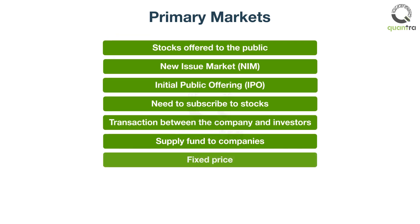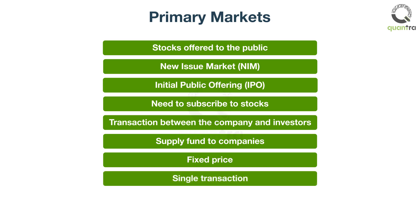The stock price would be fixed by the issuing company in the primary market. Investors can buy stocks at the specified price only. By nature, the company can issue its stock only once, and hence, the transaction in the primary market happens only once for a particular stock. You cannot transact more than once in the primary market.